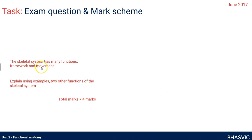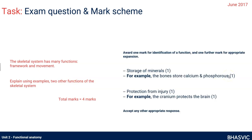Here's another question: it gives you two functions and wants any other two — slightly kinder, as you have four to choose from. For example, storage of minerals or protection from injury, but the question says explain using examples, so you must include one. Mineral store — for example, storing calcium. Protection from injury — for example, the cranium protects the brain. If you don't provide an example, you'll only get a fraction of the marks.